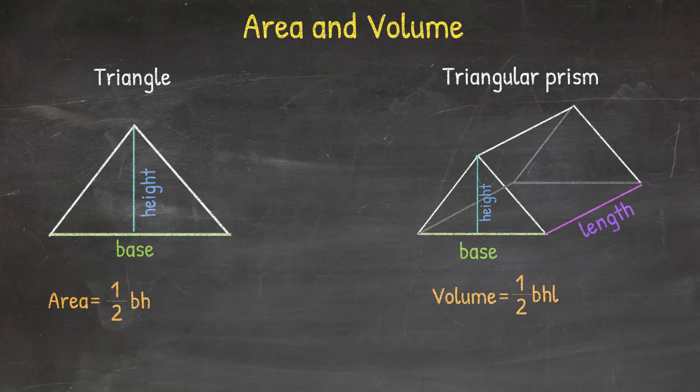That length adds the third dimension to the triangle. To calculate the volume, we need to use the same parts as in calculating the area: one-half times base times height for the triangle that is part of the triangular prism.